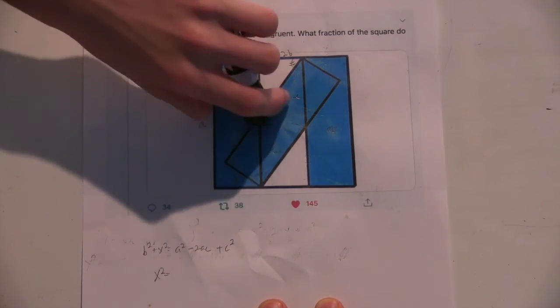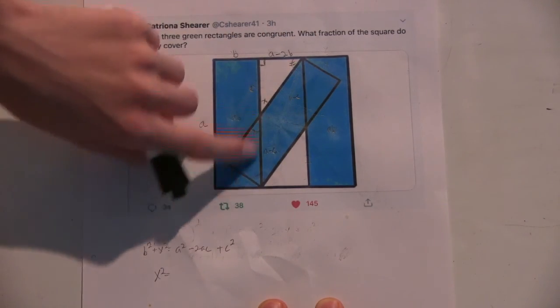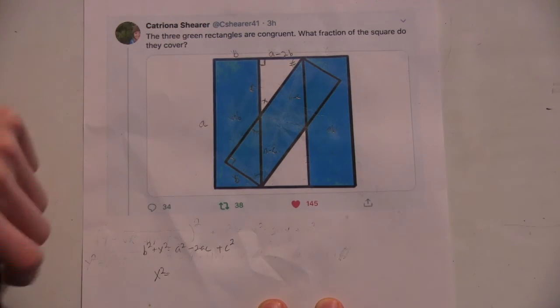Because you have this as, this is, if this is C, this is A minus C. Right, yeah. So, that's the only way to sort of compare side lengths between these two triangles. Okay.